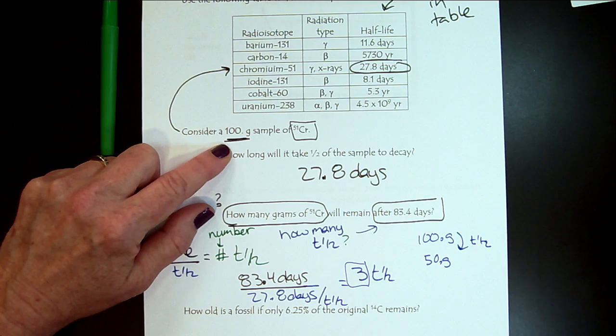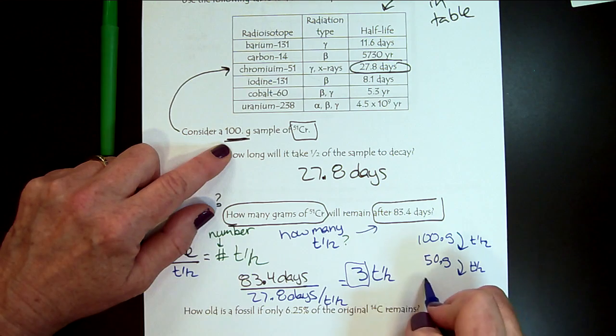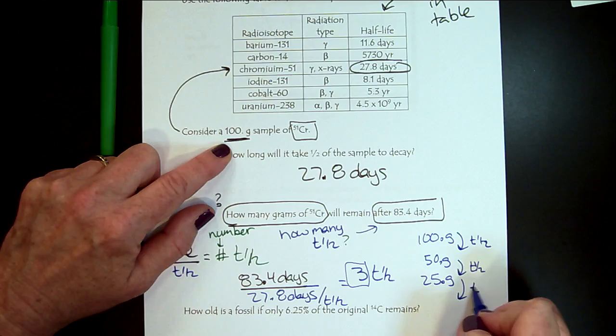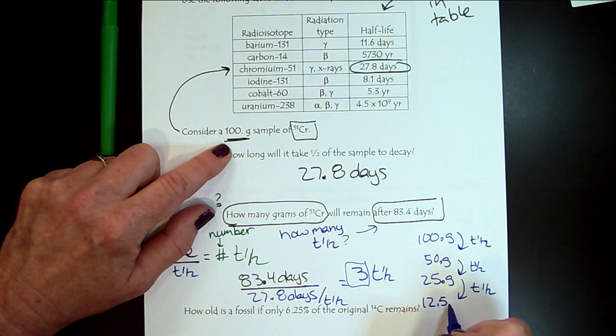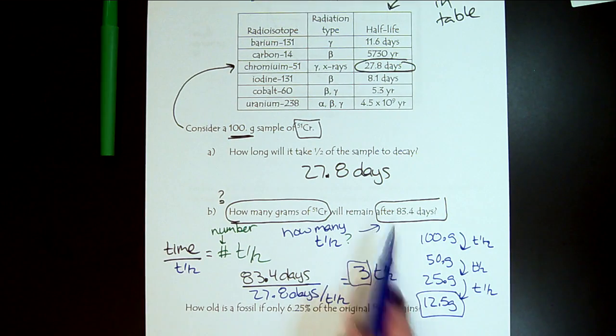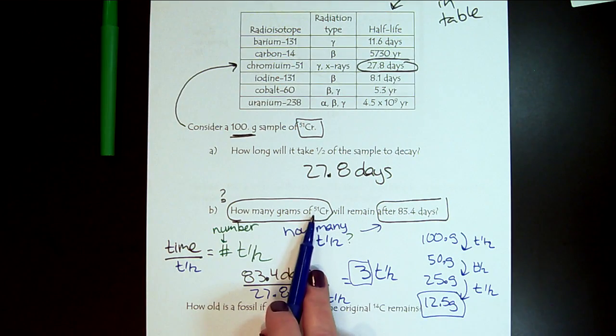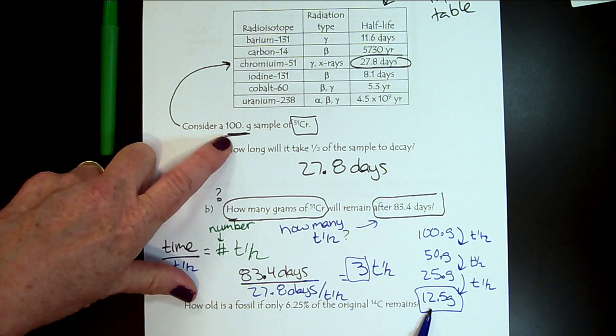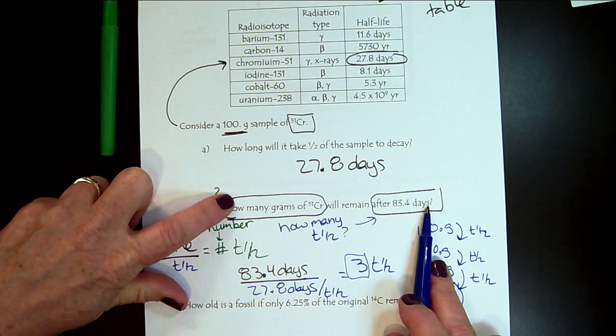So after the first half-life, we're only going to have half, 50 grams. After the second half-life, we'll have 25 grams. And after the third half-life, we will have 12.5 grams. So after 83.4 days, we will have 12.5 grams of chromium-51 left. So notice that the amount of sample went down as the time got longer because more of the sample decayed.